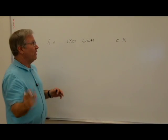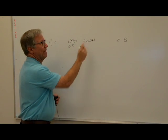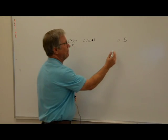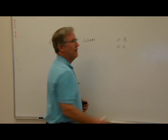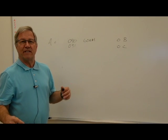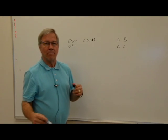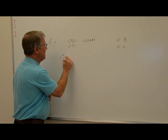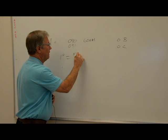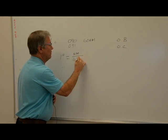But if we fly a heading of 091 for that 60 nautical miles, we'll end up at point C. And we know that the distance between point B and C is one nautical mile. Therefore, one degree equals a nautical mile at 60 nautical miles.